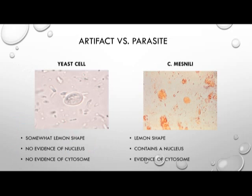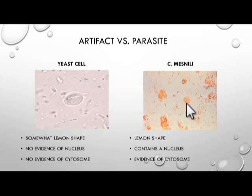Distinguishing artifact from parasite: on the left we have a yeast cell, which is somewhat lemon-shaped, but there's no evidence of any nucleus or cytosome. On the right we have Chilomastix mesnili, which is lemon-shaped and does contain a nucleus, with evidence of a cytosome. Also note there's no parabasal body or axostyle present, and there is an eccentric karyosome visible.